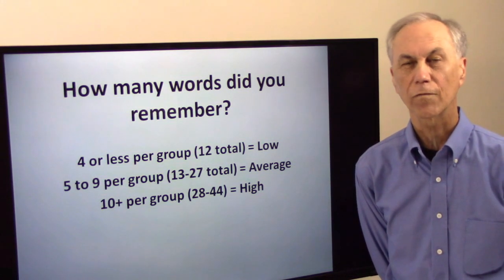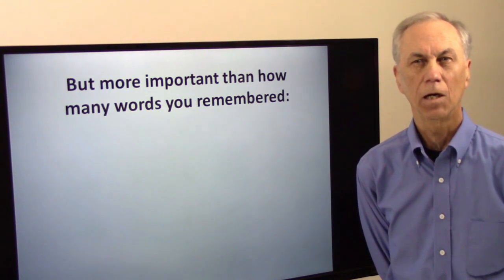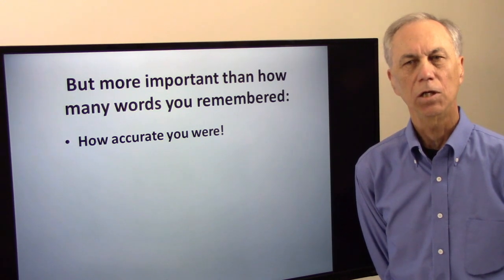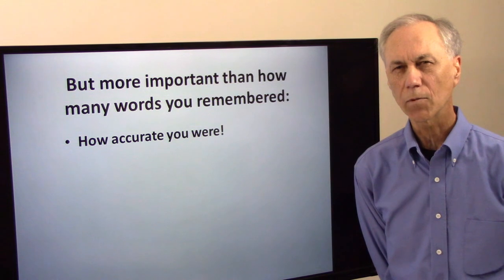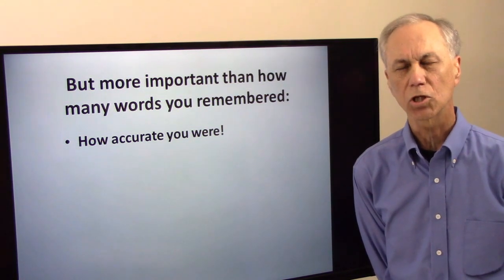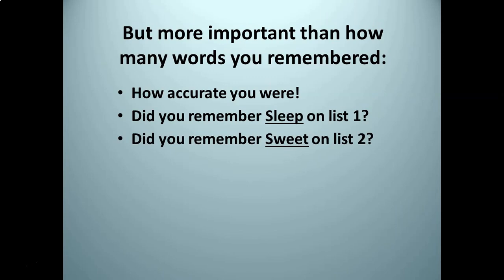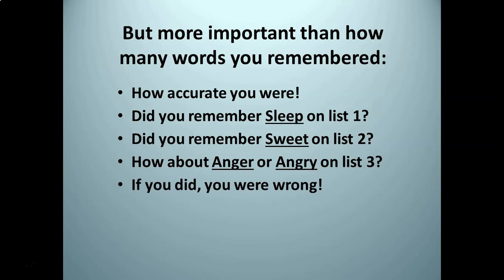But there's something more important than how many words you remember, and that is how accurate were you. Did you actually remember the right words? In the first group, did you remember and write down the word sleep on list one? In the second group, did you remember and write down the word sweet on list two? And on the third list, did you write down either anger or angry? If you did, you were wrong. Those three words didn't appear on any of those lists. Those words were never there. Your mind created a false memory.